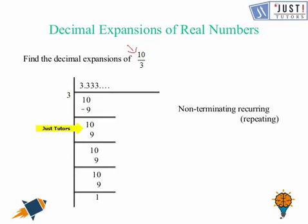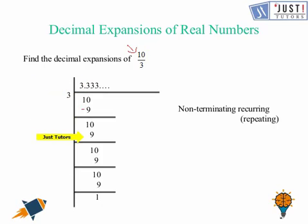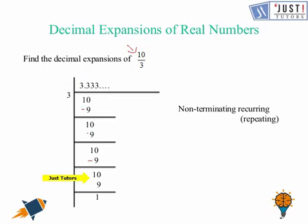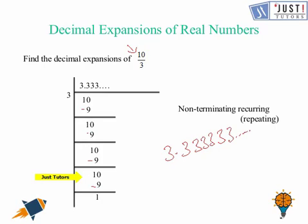Now how many 3s go into 10 again? We put a 0 and a decimal. How many 3s go into 10? That is 3 again; 3 times 3 is 9, and 10 take away 9 is 1 again. The steps keep repeating: 3 times 3 is 9, remainder 1, and so on. So we can write this as 3.333... where 3 keeps repeating. This is a non-terminating recurring decimal expansion.